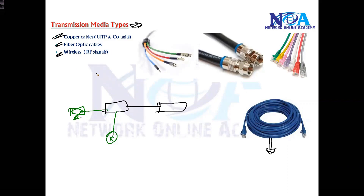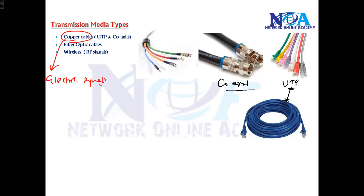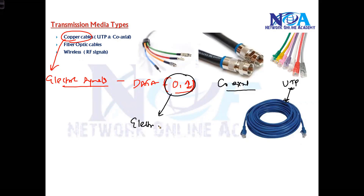In LAN connections, we can use any one of these media types. We'll be using copper cables. Generally there are two types of copper: coaxial cables and unshielded twisted pair cables. Copper cables use electrical signals — your data, which is zeros and ones in binary, is transmitted in the form of electrical signals.